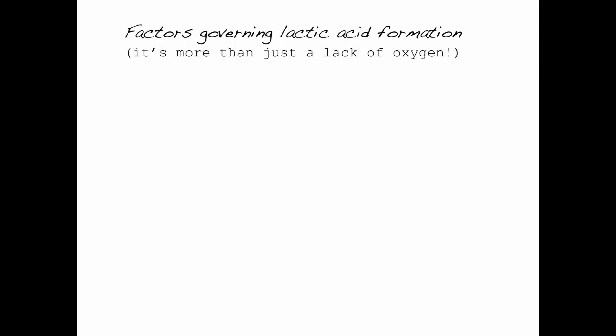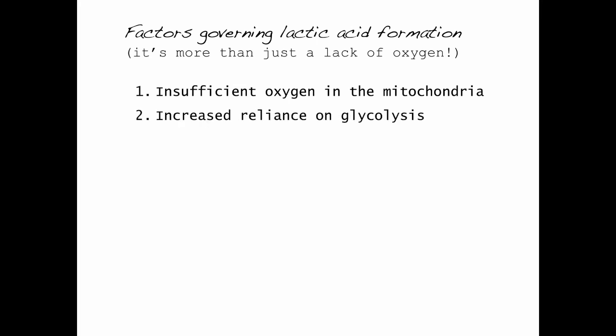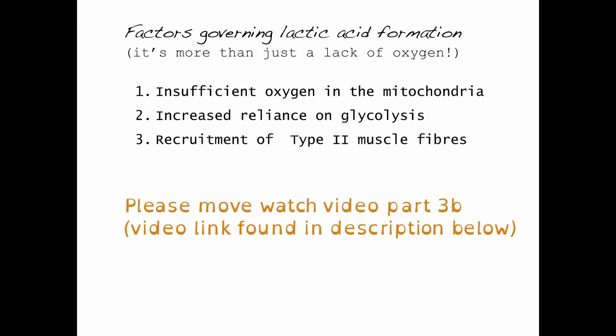So far in this video we've covered the first two reasons why lactic acid is formed in skeletal muscle. That is, sometimes there's insufficient oxygen in the mitochondria, and at other times there's a very high glycolytic flux. Glycolysis is going very fast. In order to cover the third reason, a greater recruitment of type 2 muscle fibers, I've created a separate video as YouTube only allows me to record up to 15 minutes and this will take me a little bit longer. So please move on to watch part 3 of this video series, and you'll find the video link below in the description.